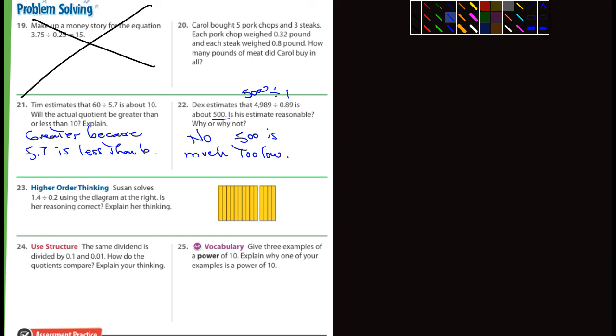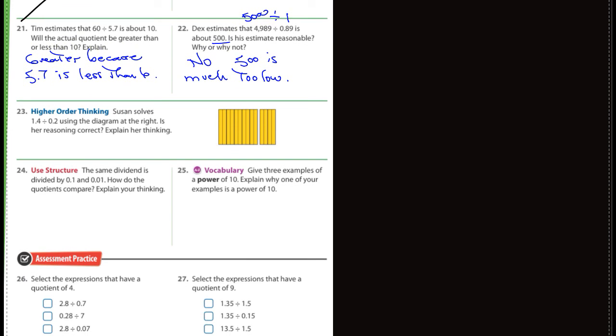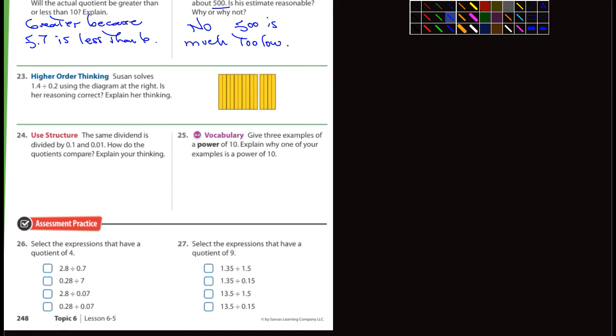Number 23. Man, I shouldn't do all these for you. Sometimes I get carried away. Susan solves 1.4 divided by 0.2 using the diagram at the right. Is her reasoning correct? Yeah, looks like the answer is yes. So 1.4 into seven groups. Seven groups of 2 tenths. So what do we have here? 1, 2, 3, 4, 5, 6, 7.